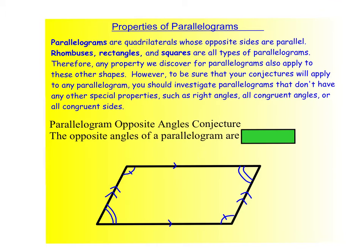Okay, let's read the following properties of parallelograms. Parallelograms are quadrilaterals, shapes with four sides, whose opposite sides are parallel. Rhombuses, rectangles, and squares are all types of parallelograms. Therefore, any property we discover for a parallelogram also applies to those other shapes. However, to be sure that your conjectures will apply to any parallelogram, you should investigate parallelograms that don't have any other special properties, such as right angles, all congruent angles, or all congruent sides.